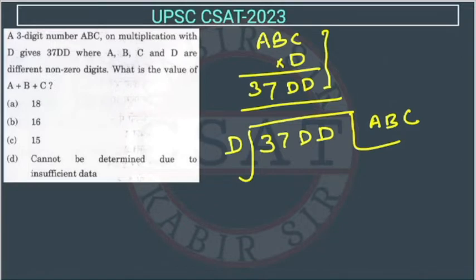So, how will we do it? See, D can take value from how many values? These are non-zero digits, so D can take any value from 1 to 9. So, just try and see, can we get it. If we are putting 1, we will get 37DD, so this will remain same, so 1 is not possible.